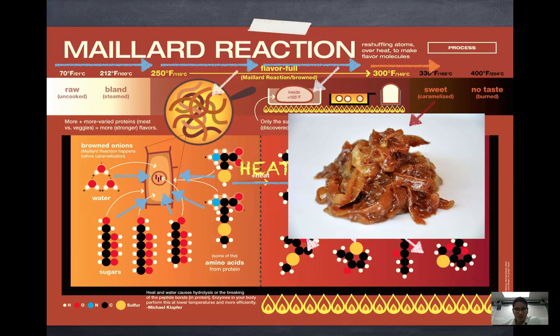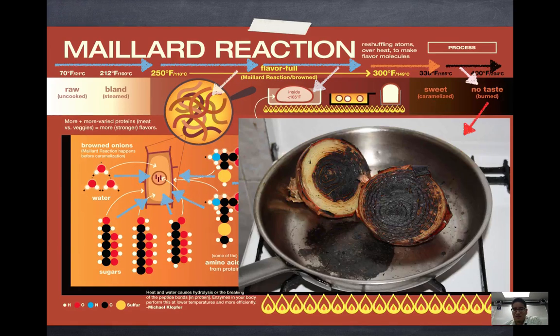Now if you add too much heat, at about 400 degrees Fahrenheit or 204 Celsius, you end up breaking way too many bonds, and the oxygen and the hydrogen will essentially turn into a gas and go off into the air, and you're left with the carbon. So you end up with a charred onion.